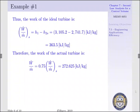Now, the work of the actual turbine is simply the efficiency times the work of the ideal turbine, or 0.75 times 363.5 kJ per kg. Or, the work of our actual turbine is 272.625 kJ per kg.